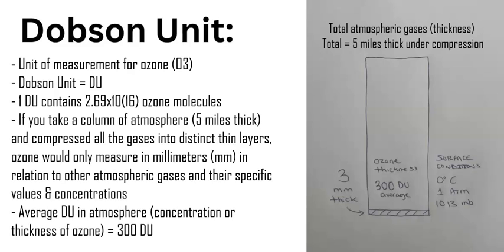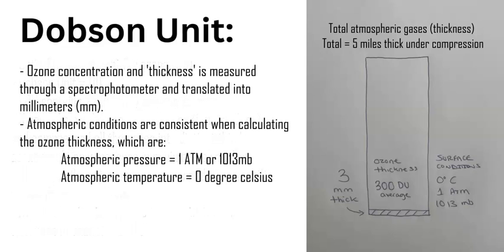The air column would be five miles high, and yet of that five miles, only three millimeters would be ozone — yet it's extremely important for the Earth's survival for species and organic life on the surface. For ozone concentration or ozone thickness, the measurement of Dobson units is measured through two different factors: temperature at zero degrees Celsius and at the pressure of one atmospheric bar, which is generally the atmosphere at the surface.